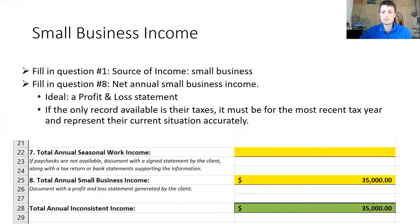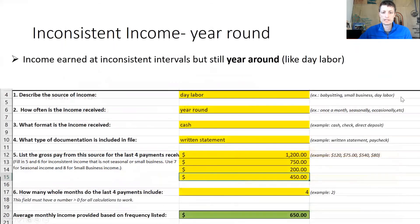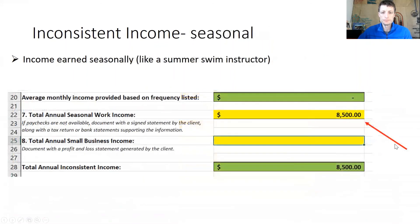If providing taxes, it must be for the most recent tax year and accurately represent their current situation. For year-round inconsistent income — such as working as a day laborer — use questions one through four to describe the income, question five to document lump sum amounts, and question six to identify how many whole months the payments represent, to arrive at a monthly average. For inconsistent income from seasonal work, such as a summer swim instructor, skip questions five and six and use field seven to record the income as a lump sum for the year.